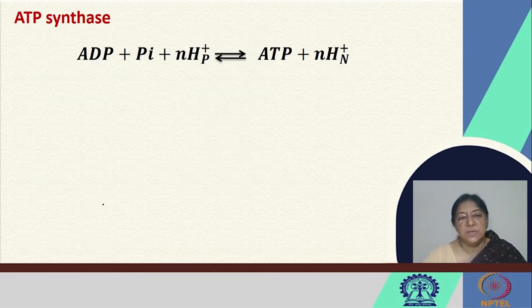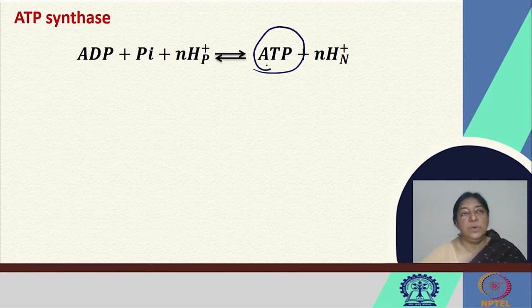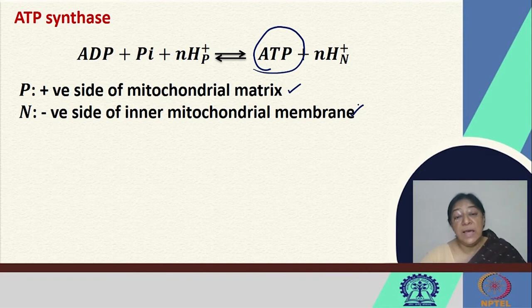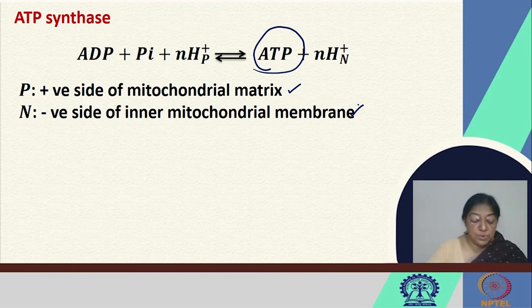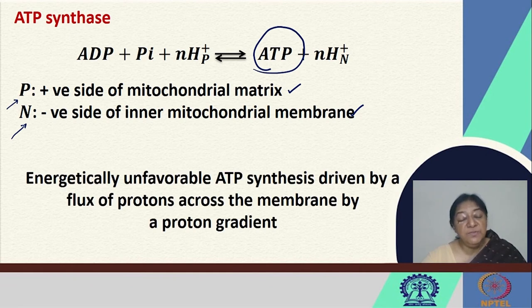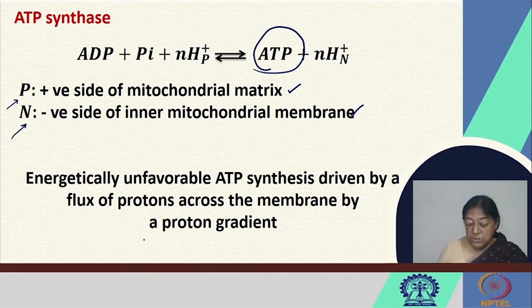ATP synthase is responsible for the formation of ATP — ATP synthesis is one of the most important reactions, occurring in the mitochondrial matrix where there is a positive side and a negative side. We will revisit this when studying membranes and membrane proteins, membrane potential, and transport across the membrane. In this case we have proton transport — P indicates the positive side and N indicates the negative side of the inner mitochondrial membrane. This energetically unfavorable ATP synthesis is driven by the flux of protons across a membrane via a proton gradient.